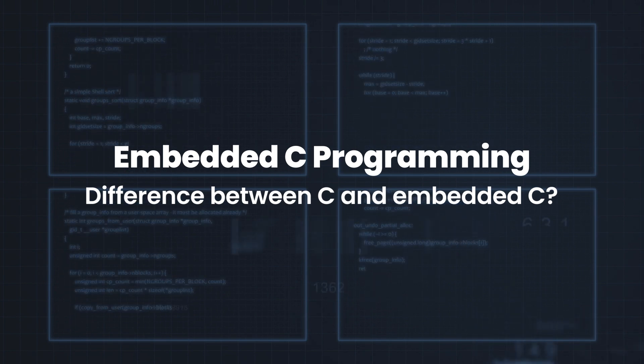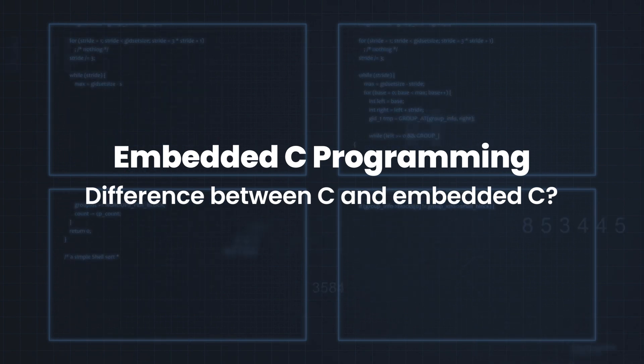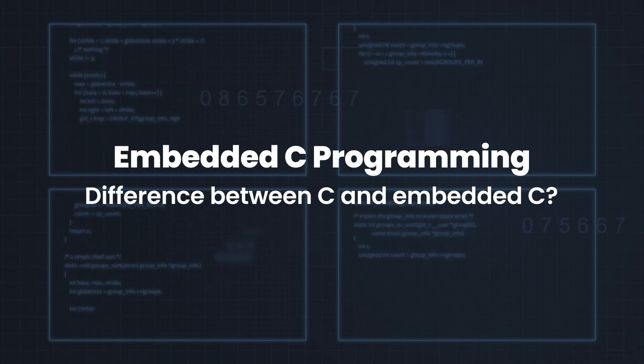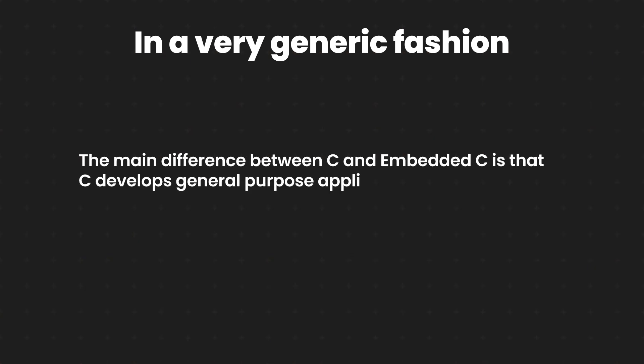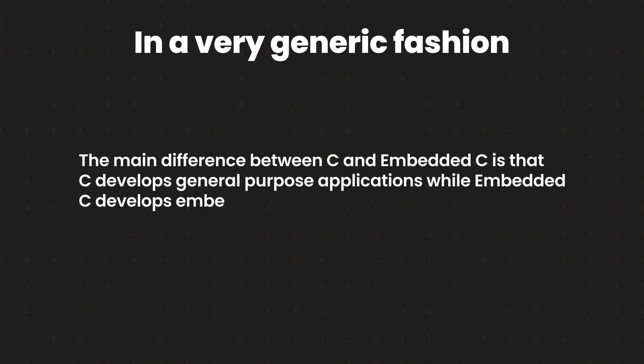The purpose of this video is to remove any confusion that may boggle up in your mind. So in a very generic way or in a very generic fashion, the main difference between C and embedded C is that the C programming language develops general purpose applications while the embedded C develops embedded systems.